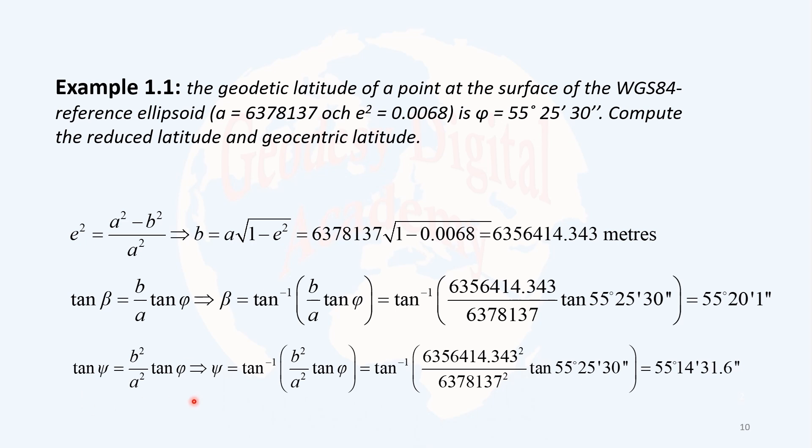Similarly, we can compute the geocentric latitude. And based on the formula, I'm taking the arctangent, you will come to that. And as you see, the minutes are smaller than the minutes of the reduced latitude, and both of them are smaller than 25 minutes. Therefore, as we already shown in the figure, the geocentric latitude for a point is smaller than the reduced latitude, and the reduced latitude is smaller than the geodetic latitude.